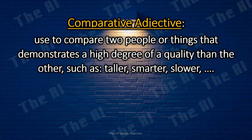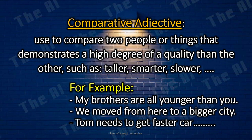Comparative Adjective. A comparative adjective is an adjective used to compare two people or things that demonstrates a higher degree of equality than the other, such as taller, smarter, slower, etc. For example: My brothers are all younger than you. We moved from here to a bigger city. Tom needs to get a faster car for the race.